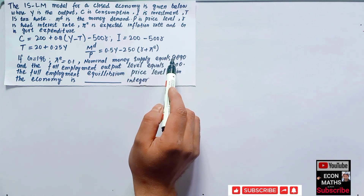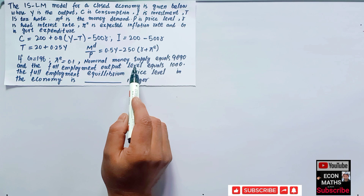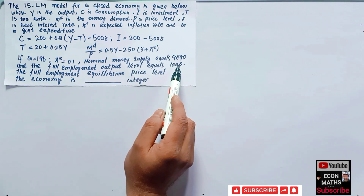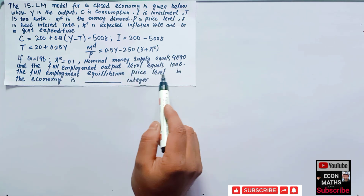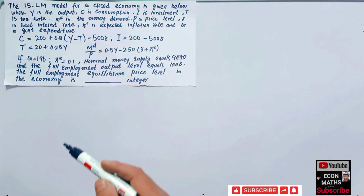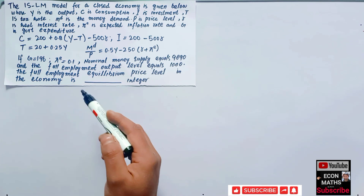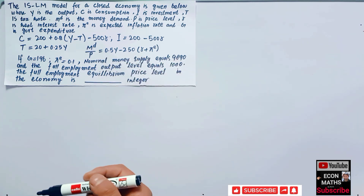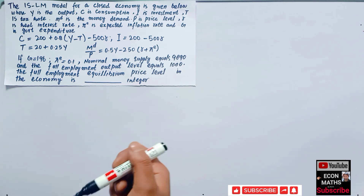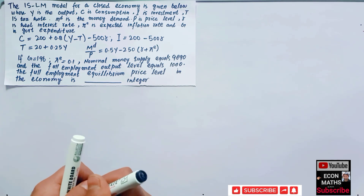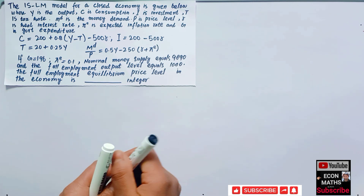Full employment output level equals 1000. We have to find the full employment equilibrium price level in the economy given these values. First of all, we write the aggregate output equation.